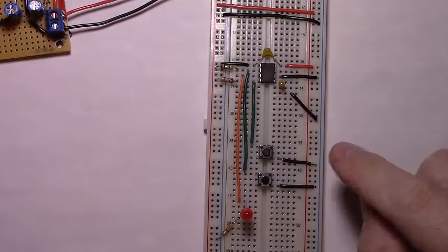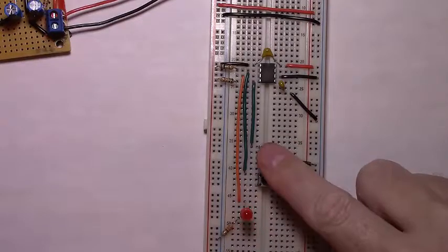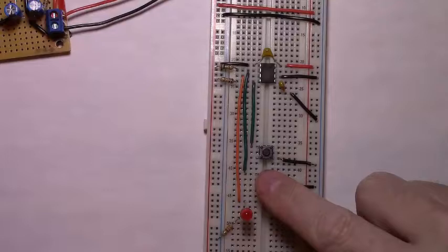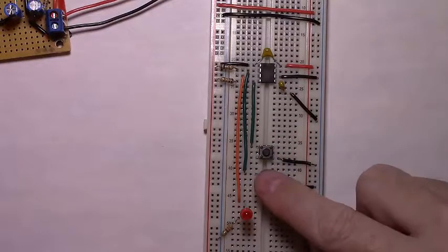The way this circuit will work is if you press the bottom momentary button, the LED comes on. If you press the top one, it goes off. Effectively, the 555 timer is serving as a flip-flop.